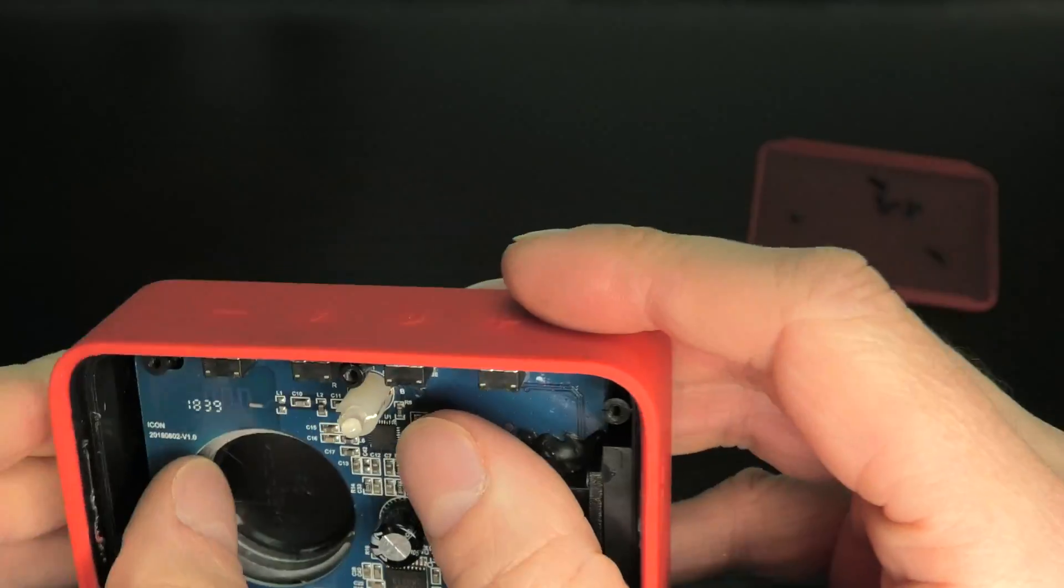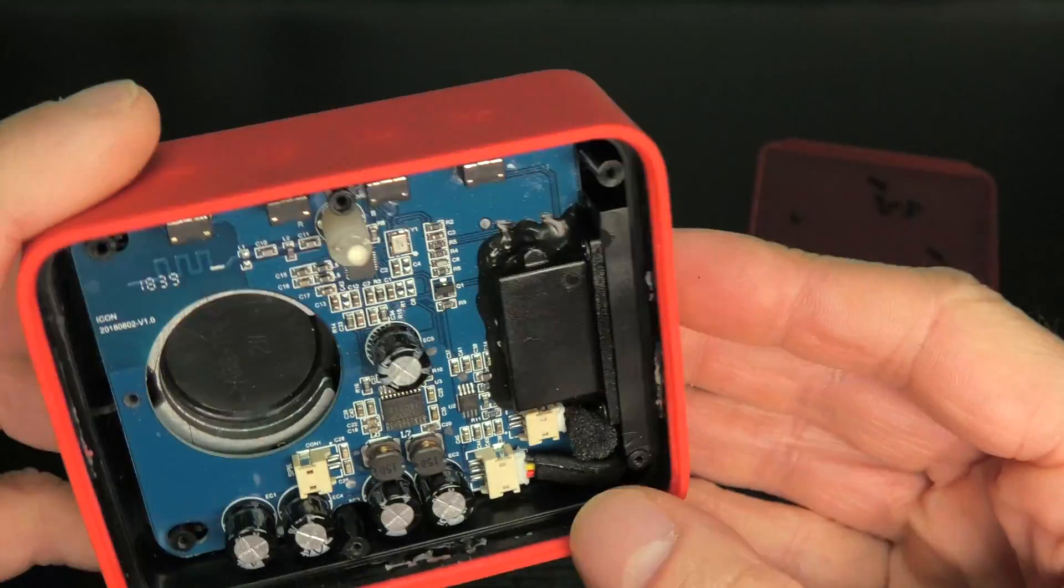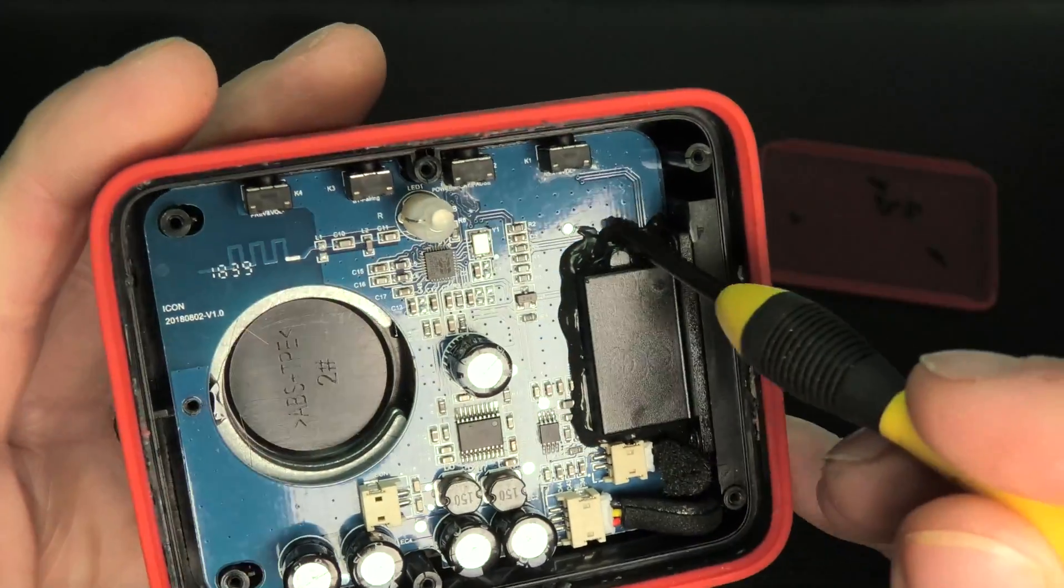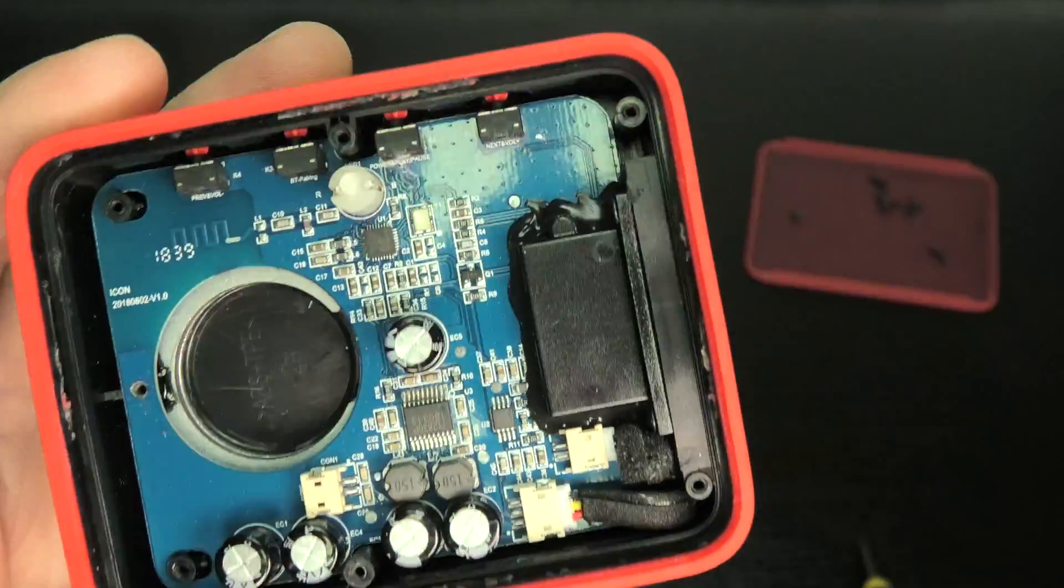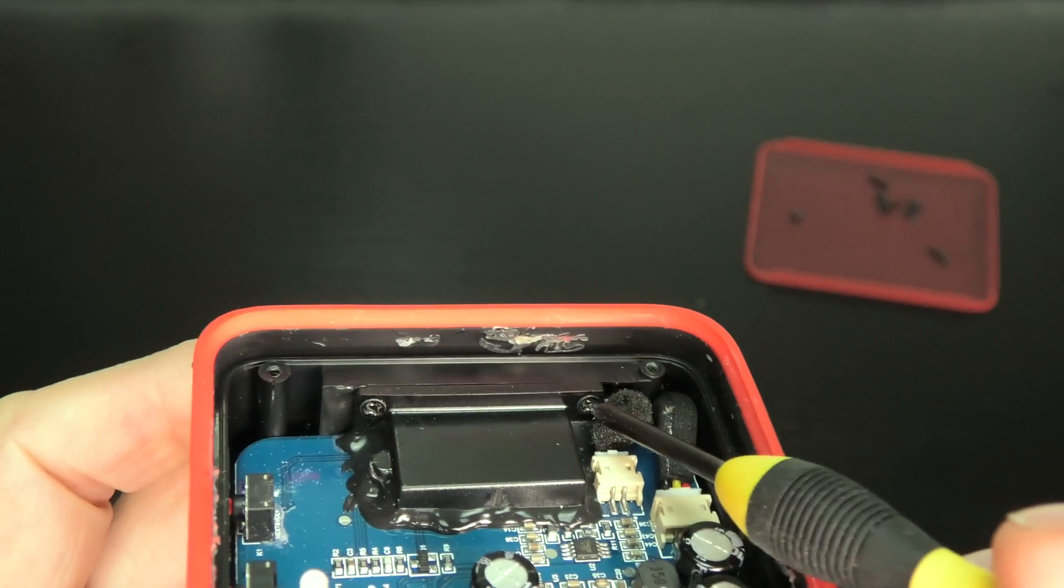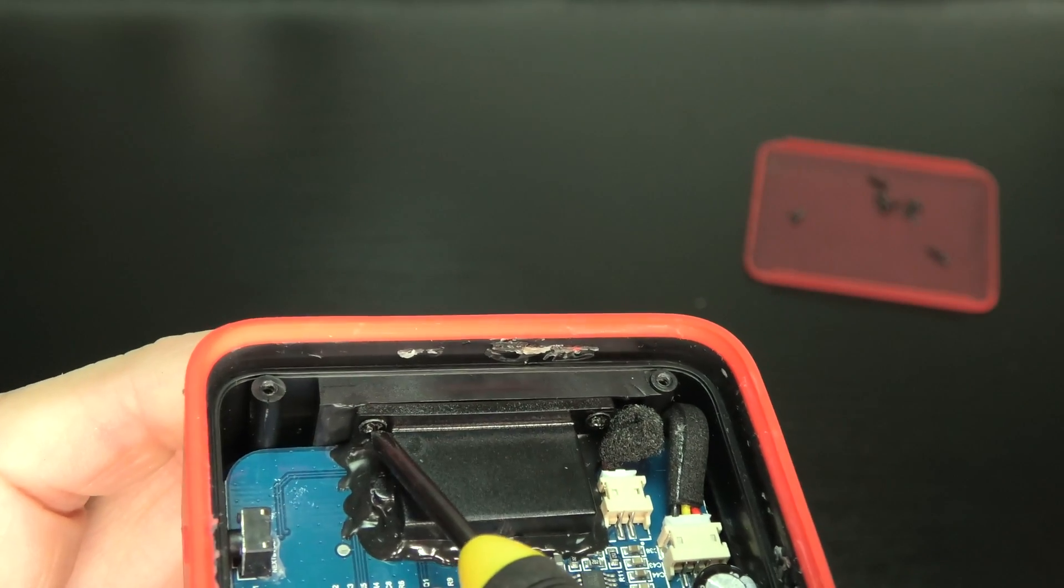But it still seems to be tightly in there so let's have a closer look at what's going on. And then here you see where the charging port is and the aux jack, that's where there's two more screws. So we have to remove those as well.